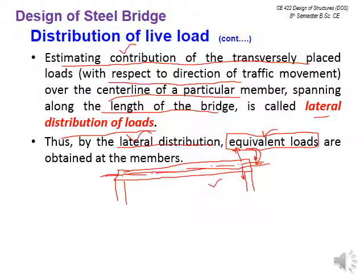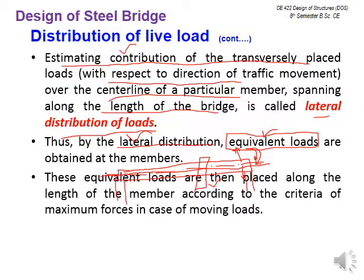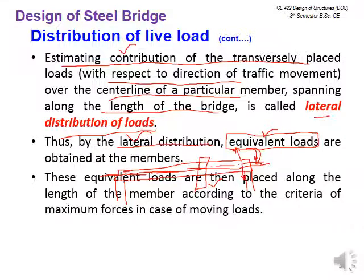This applies to girders, bridge deck, and stringers. Floor beams are placed in the lateral direction, so the term lateral distribution of loads does not apply to them — a reverse criteria is used and will be discussed later. These equivalent loads are then placed along the length of the member. For longitudinal members, first perform lateral distribution to get equivalent loads, place them along the length, then calculate maximum forces using influence line diagram concepts.